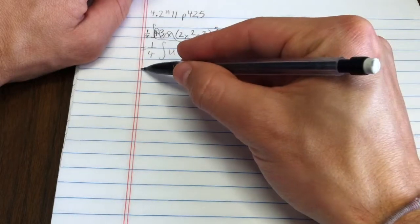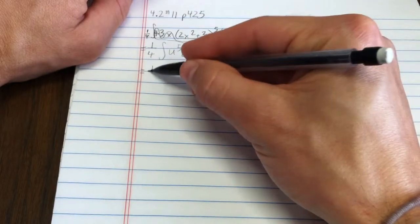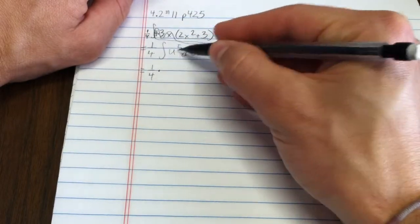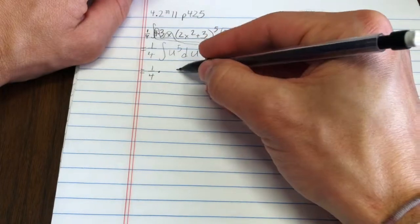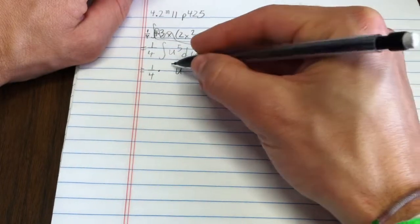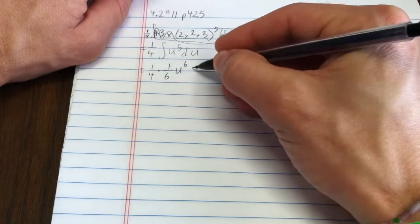Well, I know how to integrate that. That's 1 fourth times the integral of u to the 5th is u to the 6th times 1 sixth plus c.